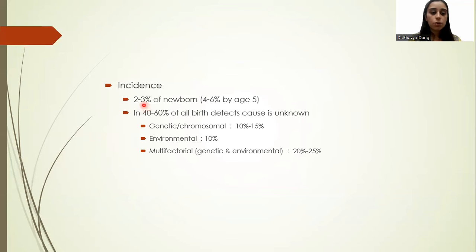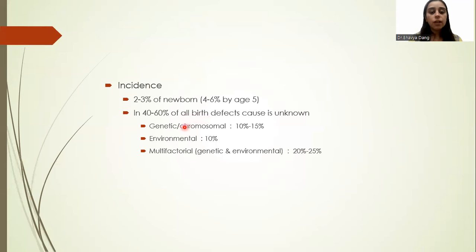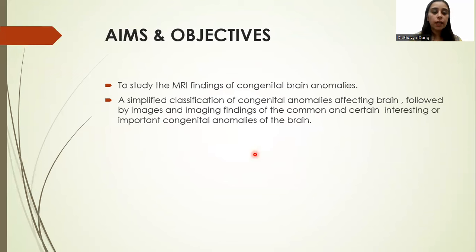Regarding incidence, there is a 2–3% incidence in the newborn, which increases to 4–6% by the age of 5 years. 40–60% of all birth defects have an unknown cause. Genetic and chromosomal causes contribute to about 10–15%, environmental causes contribute to 10%, and other multifactorial causes contribute to 20–25%.